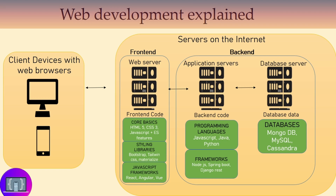Now that we understand what web development is all about, here is the roadmap to become a web developer. First, understand the core basics: HTML5, CSS, and JavaScript. After the core basics, you should learn styling libraries such as Bootstrap, Tailwind CSS, and Materialize. Then learn JavaScript frameworks such as React, Angular, and Vue. That's for those who want to become front-end developers. For back-end developers, you need to understand at least one programming language — JavaScript, Java, or Python.